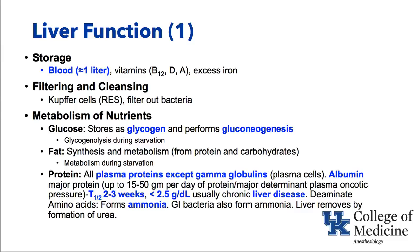All plasma proteins are made by the liver, with the exception of gamma globulins, which come from plasma cells. Albumin is the one we normally focus on, and the liver can make up to 15 to 50 grams per day of protein. Remember that albumin is the major determinant of our plasma oncotic pressure. It has a half-life of about two weeks. When preoperative albumin is less than 2.5, the patient could be malnourished or have chronic liver disease — they're just not making albumin. Amino acids are deaminated by the liver, with ammonia as the product; when the liver isn't functioning well, ammonia can build up and result in cerebral dysfunction.